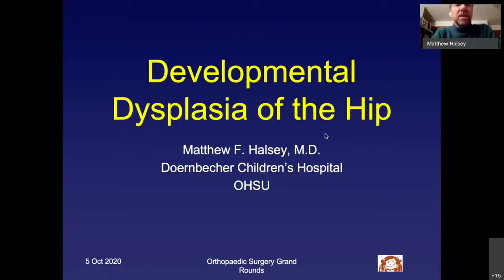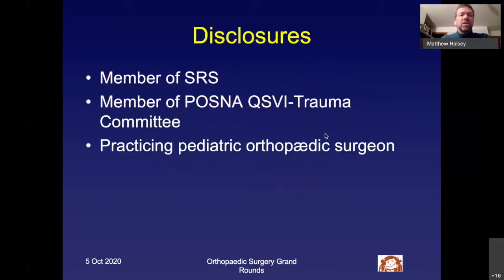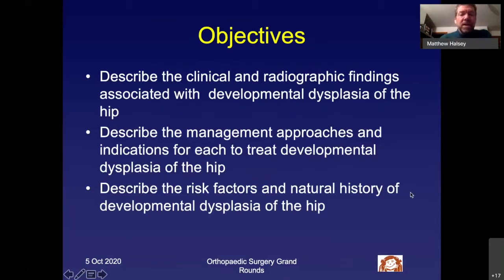Today I've agreed to give a talk on developmental dysplasia of the hip. Nothing amazing will come out of this, and most of you have heard a lot of what I'm going to say. The main point is that despite everything we know, people still have problems and cases that slip through or develop late. My objectives are to describe the clinical and radiographic findings associated with DDH, to describe management approaches and indications for treatment, and to describe the risk factors and natural history of developmental dysplasia of the hip.